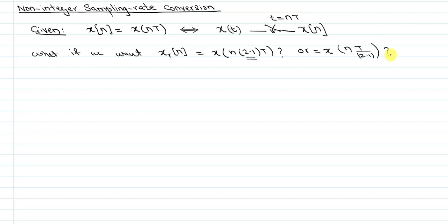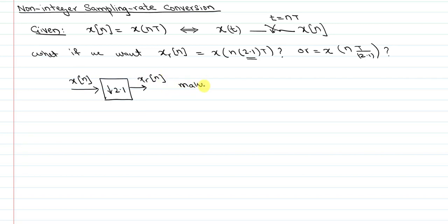What we have covered so far cannot handle this. Why? Something like downsampling by 2.1 — x(n) to x_r(n) — makes no sense. Because downsampling means, for example, when we downsample by an integer, we keep a sample and throw away that integer minus 1 samples. But we can't keep one sample and throw away 1.1 samples — that has no mathematical meaning in the discrete world.